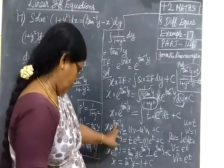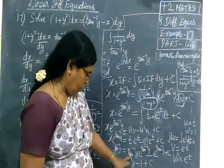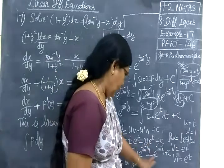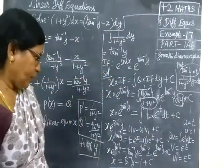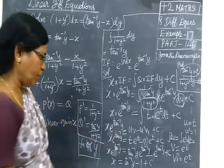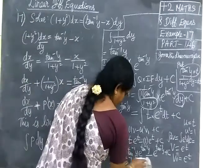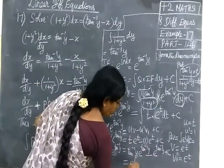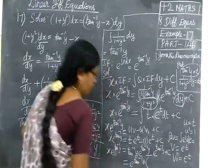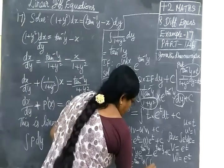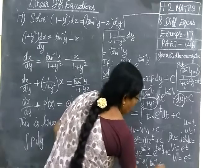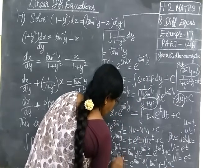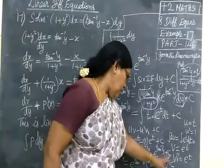Here, x times e to the power tan inverse y equals tan inverse y times e to the power tan inverse y minus e to the power tan inverse y plus c. Taking e to the power tan inverse y common from the right side and cancelling with the left side, we get the final answer: x equals tan inverse y minus 1 plus c.